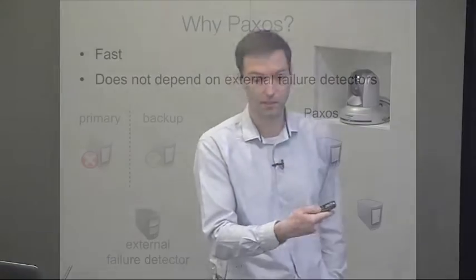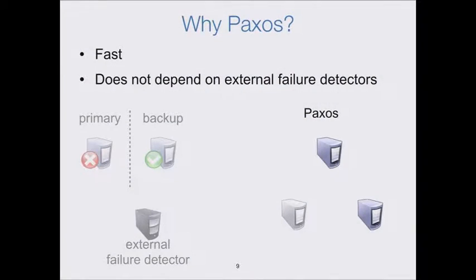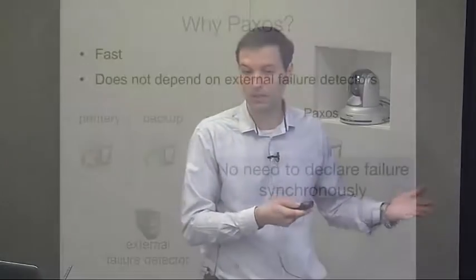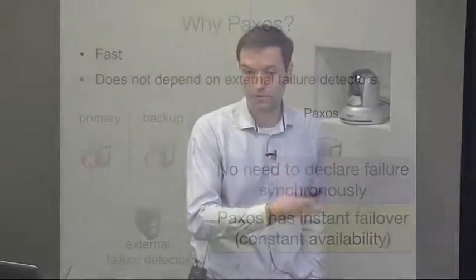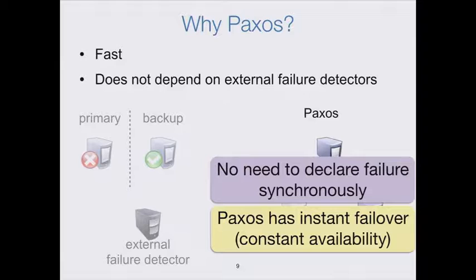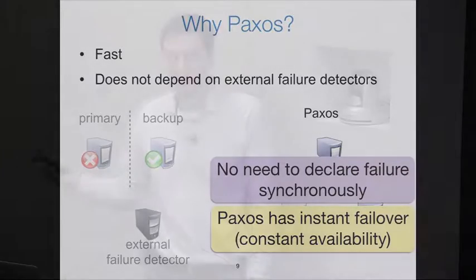In Paxos, by contrast, we use more resources — three replicas instead of two to tolerate one failure. But any network partition or any replica appearing to have failed will not cause the remaining majority of replicas to stall; they will be able to continue processing commands. We don't have to declare failure synchronously; we can just continue operating with the majority of the replicas. That means Paxos and systems like Paxos have almost instant failover, which is very high availability.